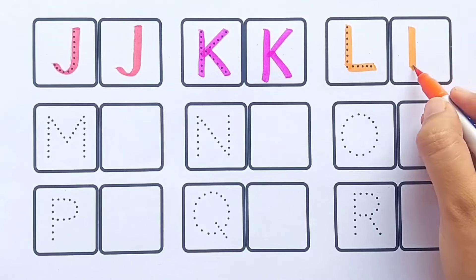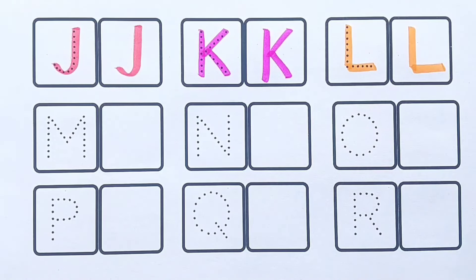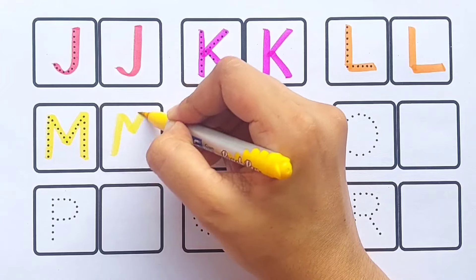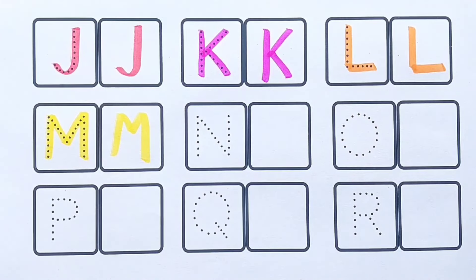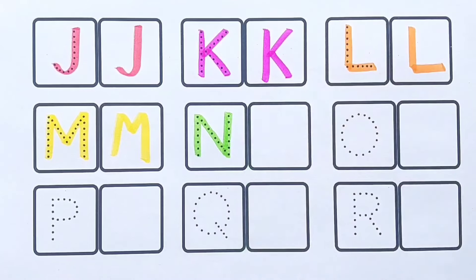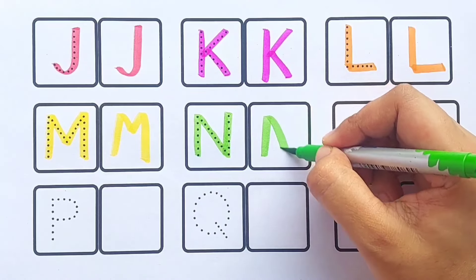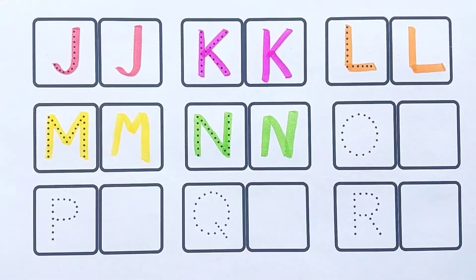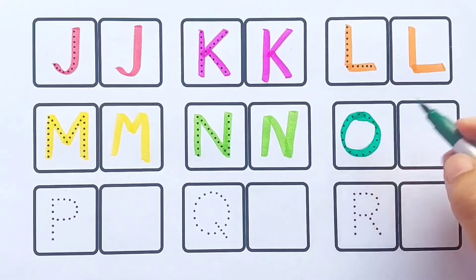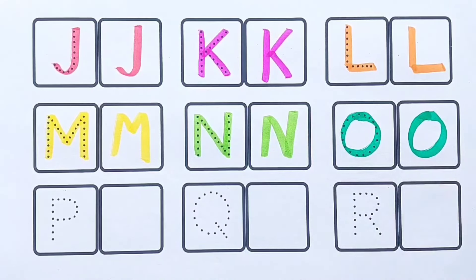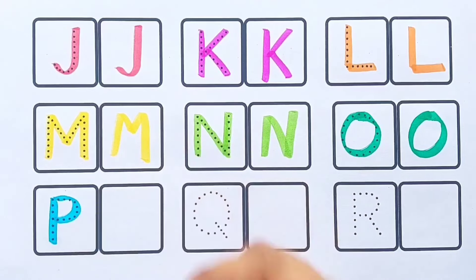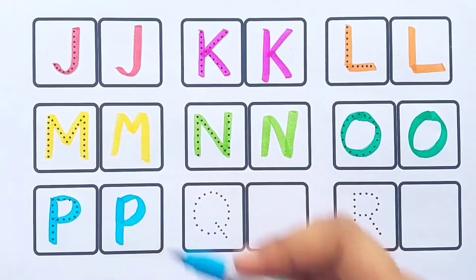Yellow color. M M for monkey, light green color. N N for nest, green color. O O for owl, sky blue color. P P for pigeon, purple color.